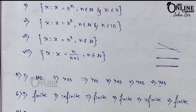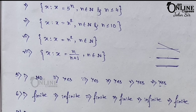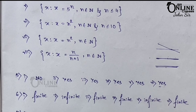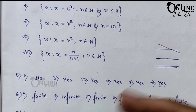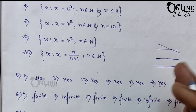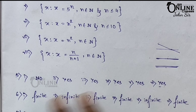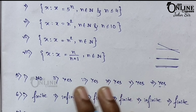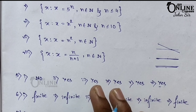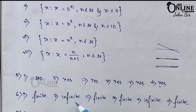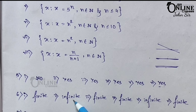Second one: the set of numbers which are multiples of 7. Multiples of 7 have no fixed number — 7 times 10, 7 times 20, 7 times 30, and so on up to thousands. There is no fixed count, so it's an infinite set.